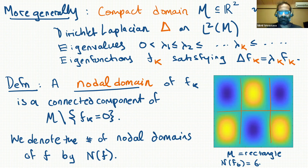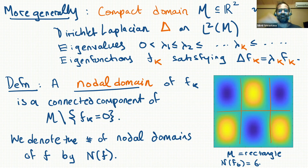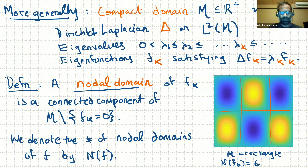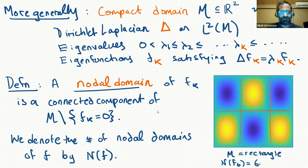For example, here's a picture of a rectangle in the plane showing its sixth Laplacian eigenfunction with Dirichlet boundary conditions. The zeros split the domain into six pieces. We're interested in counting the number of these pieces, which I'll call N(f). The question is: how is the number of nodal domains related to the index of the eigenfunction — that is, the index of the corresponding eigenvalue?